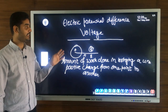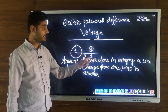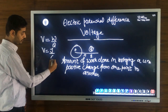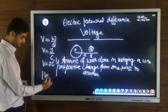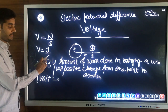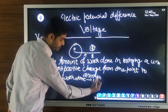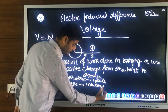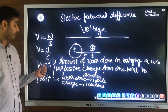The only difference between electric potential and electric potential difference is that in potential we bring the charge from infinity, while in potential difference the charge moves from a particular point where the influence of other charges is experienced. The unit is V = W/Q, that is joule coulomb inverse or volt. One volt is when work done of 1 joule is done in bringing a charge of 1 coulomb from one point to another.